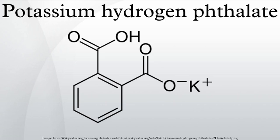KHP dissociates completely in water, giving the potassium cation and hydrogen phthalate anion. As a weak acid, hydrogen phthalate reacts reversibly with water to give hydronium and phthalate ions.